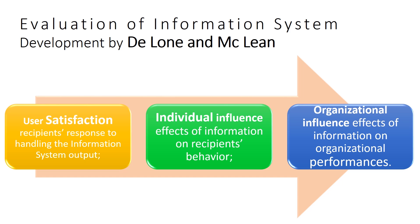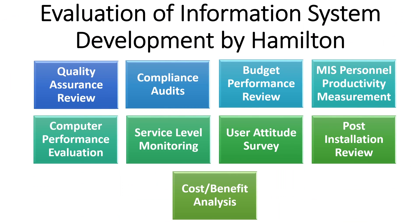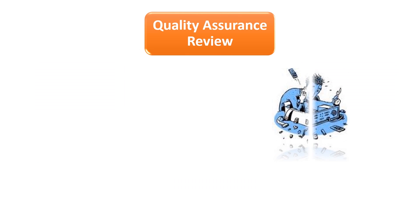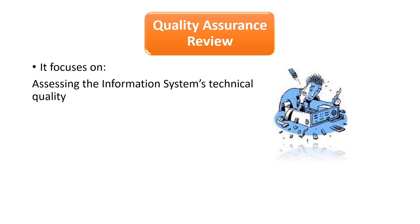Information system development should be evaluated from time to time, and the following are the approaches given by Hamilton. Number one: Quality Assurance Review. It focuses on assessing the information system's technical quality, for example, comparison to standards.